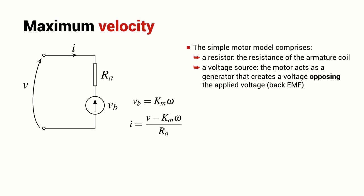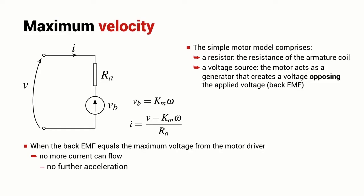Turning now to the maximum velocity. The electrical model for the motor contains a generator, the so-called back EMF source and as the motor rotates faster and faster, the back EMF rises and when the back EMF equals the applied voltage, then no further current can flow into the motor. It will stop accelerating and that will define the maximum speed of the motor given by an equation like this.